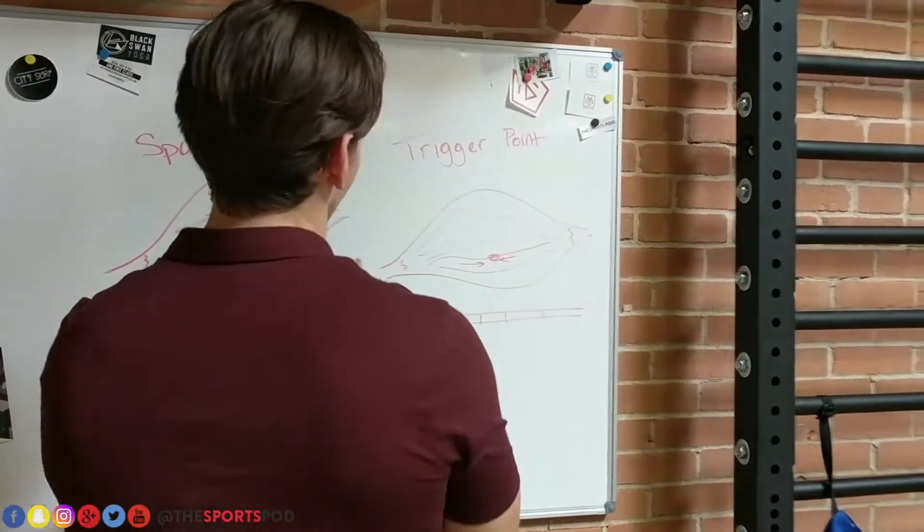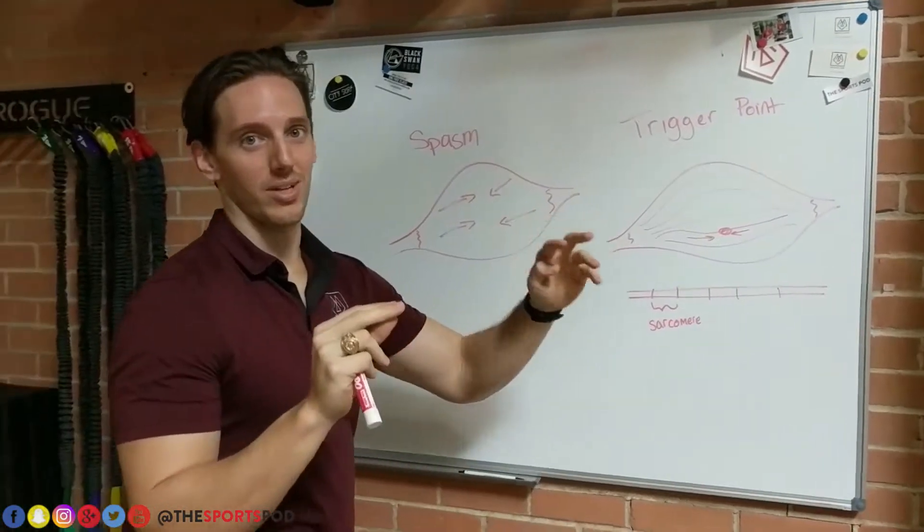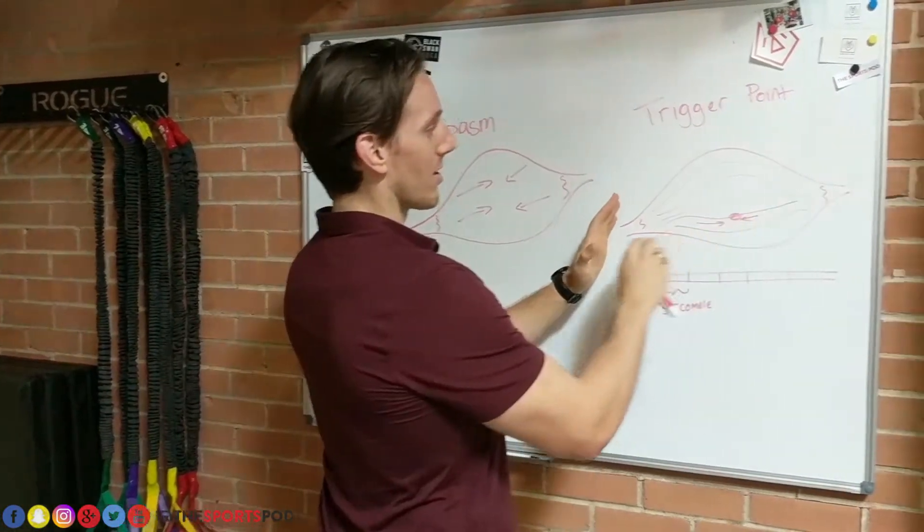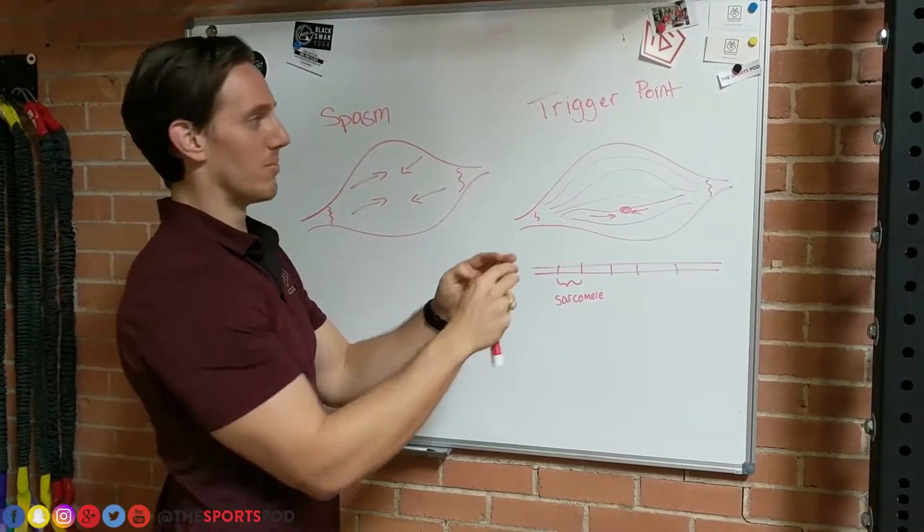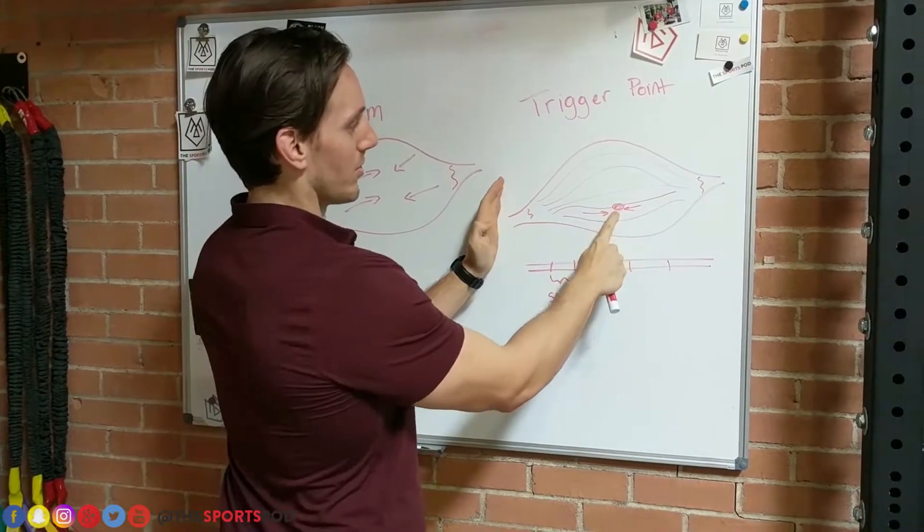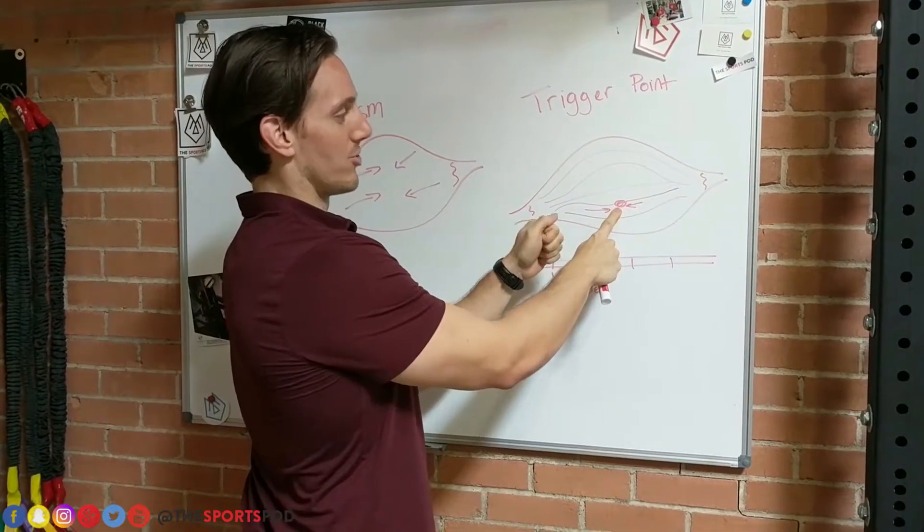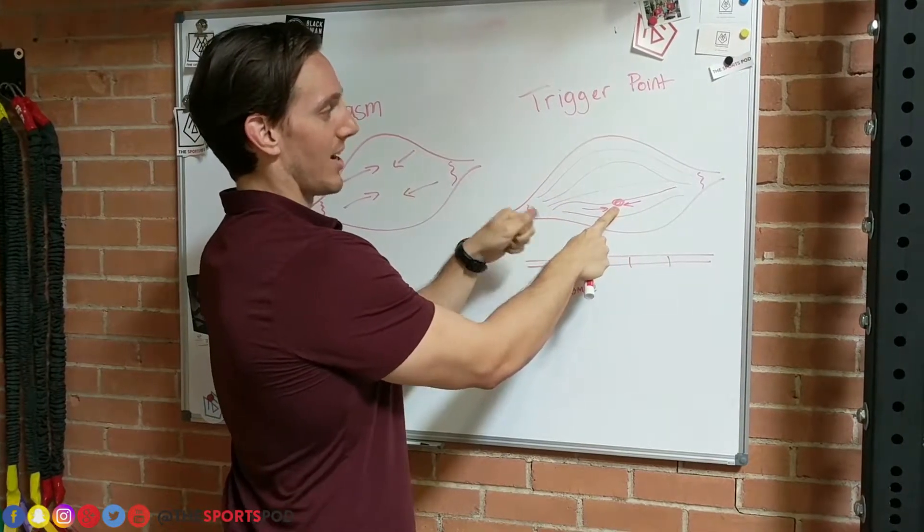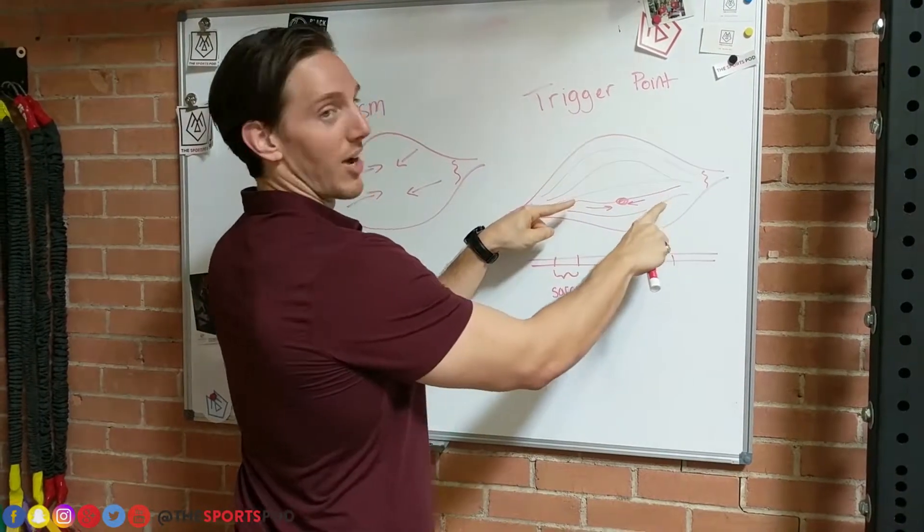Now we're going to talk about what a trigger point is. If we look at our muscle here, it's made of a bunch of individual muscle fibers. You can see these lines right here. A trigger point would be like a little knot, nodule, or bump inside the muscle in one muscle fiber.